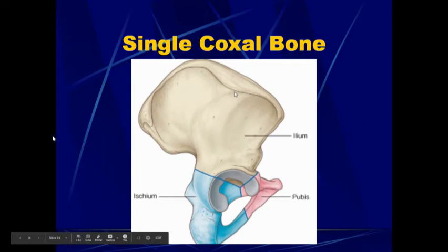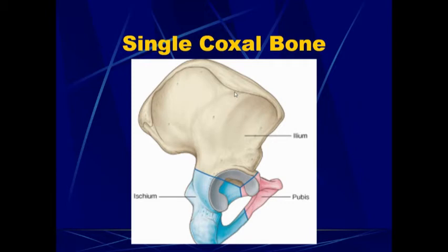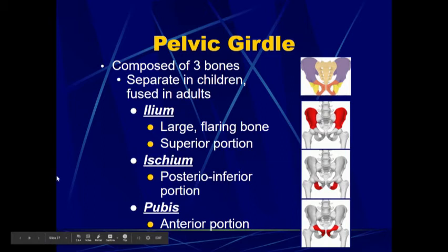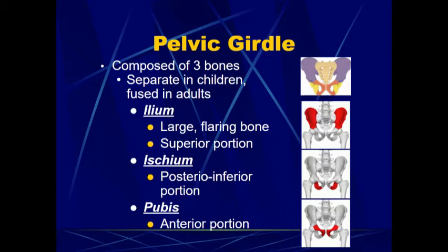That is one single coxal bone — we actually have two which make up both sides of the pelvis. Each coxal bone is made up of three individual bones that have fused together. As children they are separate, but by the time you are an adult they have fused together. The ilium is the large flaring bone — if you put your hands on your hips, you are resting your hands on the ilium of each coxal bone. It is the superior portion.